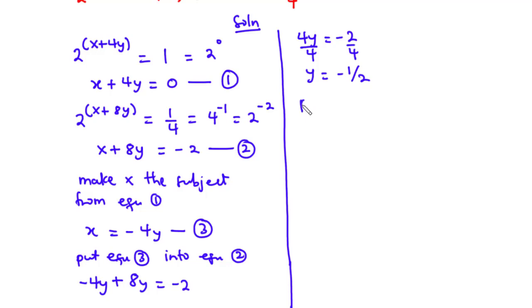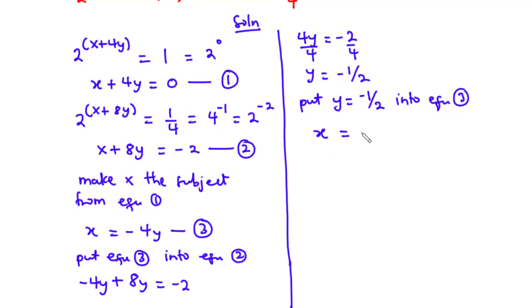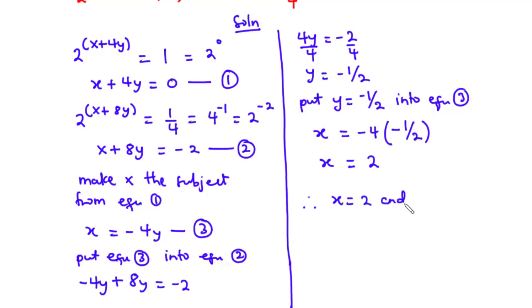Now we substitute y equals negative 1 over 2 into equation 3, which looks simpler. From equation 3, x equals negative 4y, so x equals negative 4 times negative 1 over 2. Multiplying gives x equals 2. Therefore, x is equal to 2 and y is equal to negative 1 over 2.